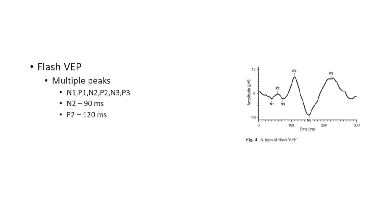Flash VEP has about six waves — three negative (N1, N2, N3) and three positive (P1, P2, P3). The most important are N2 and P2: N2 comes around 90ms and P2 around 120ms after stimulus onset. At least a minimum of two recordings should be done to confirm reproducibility. All electrophysiological tests — VEP, ERG, extended protocols, MFERG — require laboratory-specific normative data. A VEP from a different lab cannot be compared to one from your own lab.